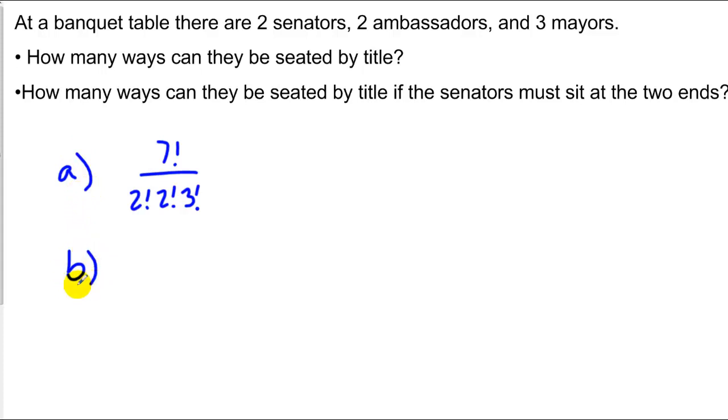Now the second part, we want to know how many ways they can be seated by title if the senators must sit at the two ends. So this problem is a little more difficult, and we're going to have to diagram this out. If the senators are going to sit at two ends, that means I get either my senators here, or I get my senators over here.